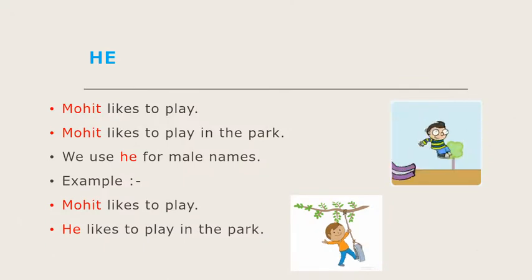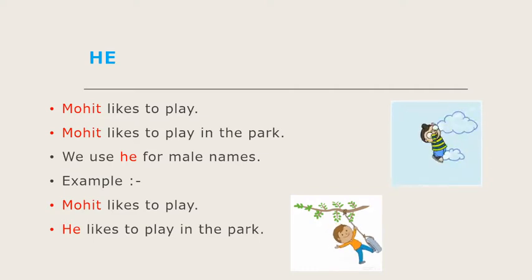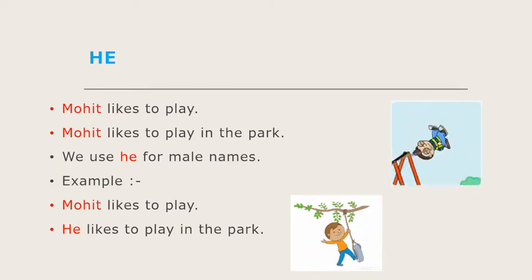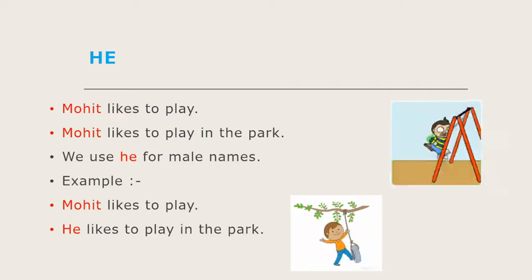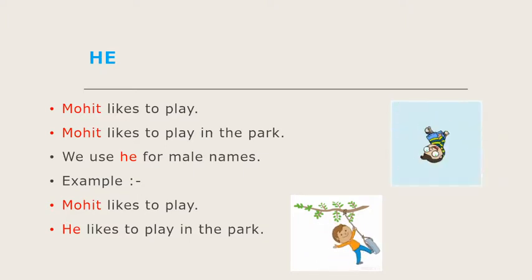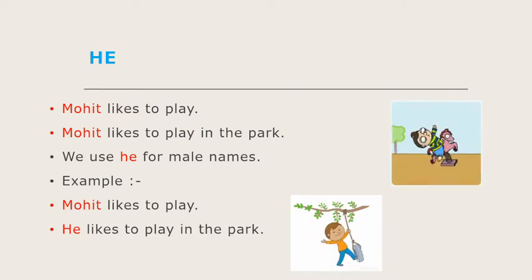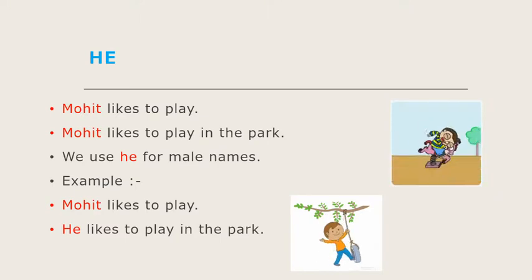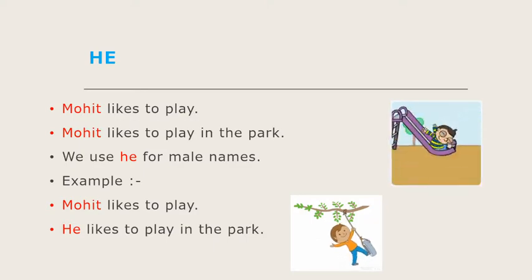Next is 'he.' Mohit likes to play. Mohit likes to play in the park. Here, we are talking about a boy, Mohit. Mohit is a boy, so we use 'he' for male names. For male naming words, we use 'he.' For example, Mohit likes to play, and next time when we are talking about Mohit, we use the word 'he.' He likes to play in the park.